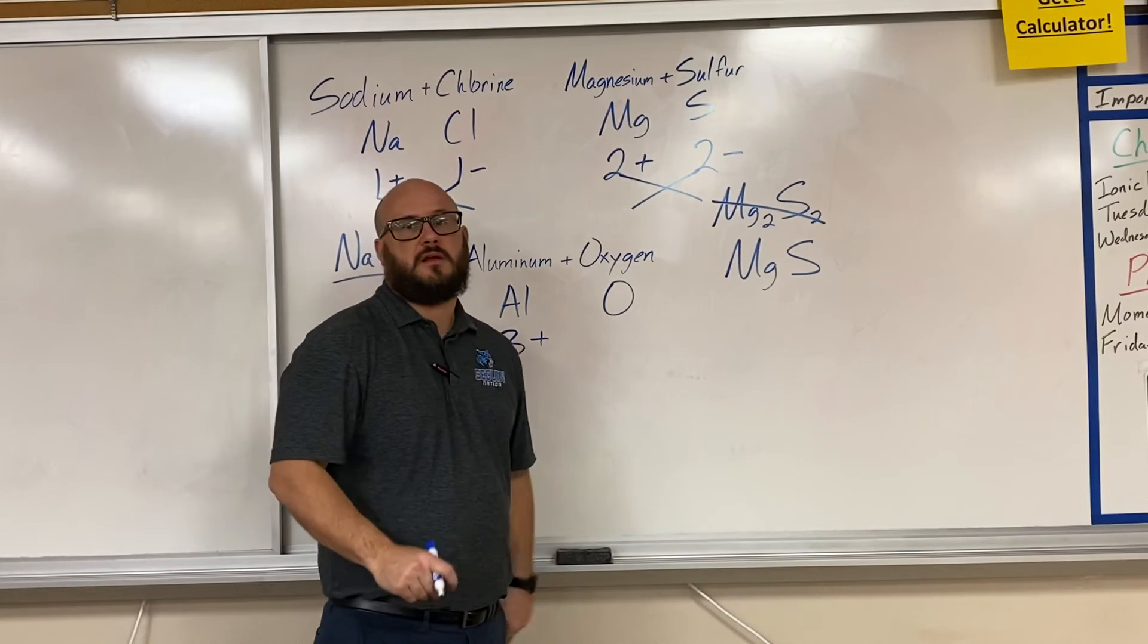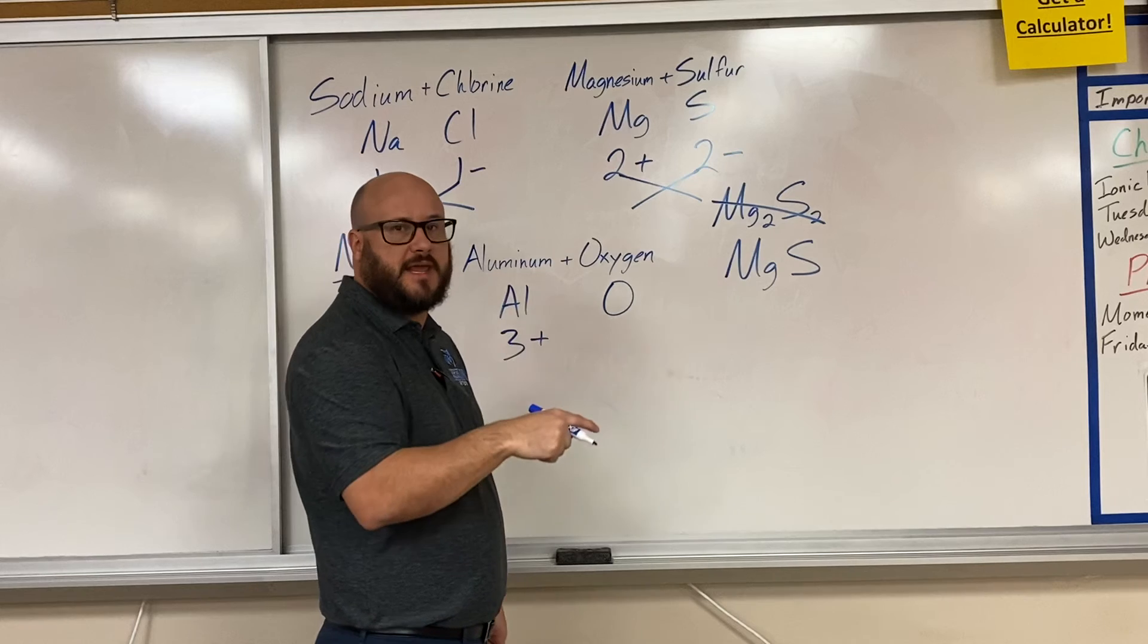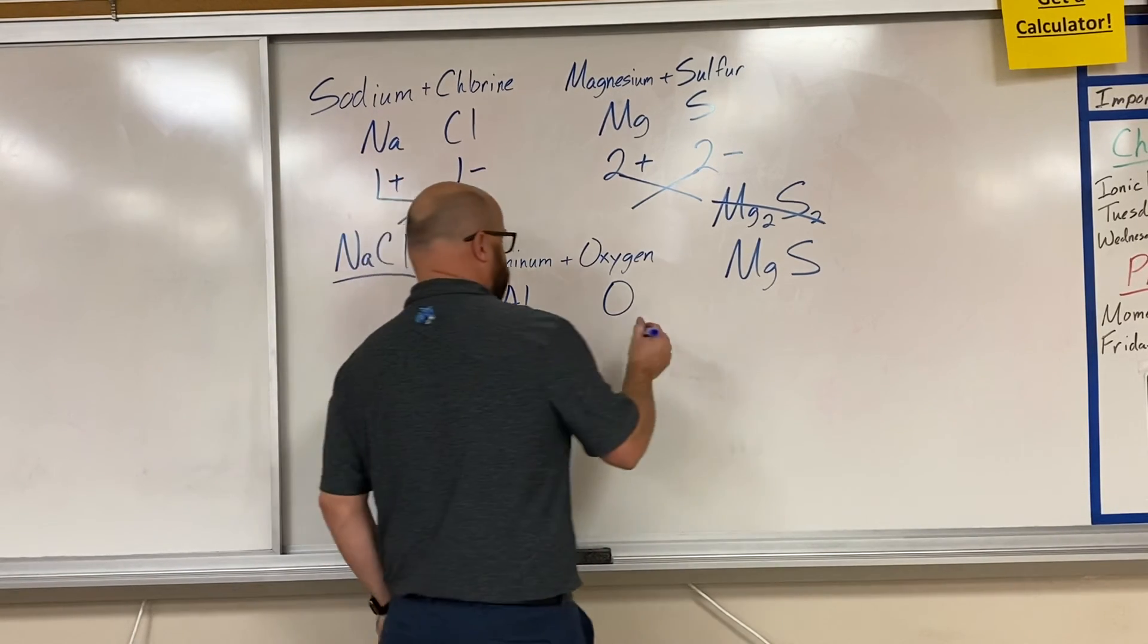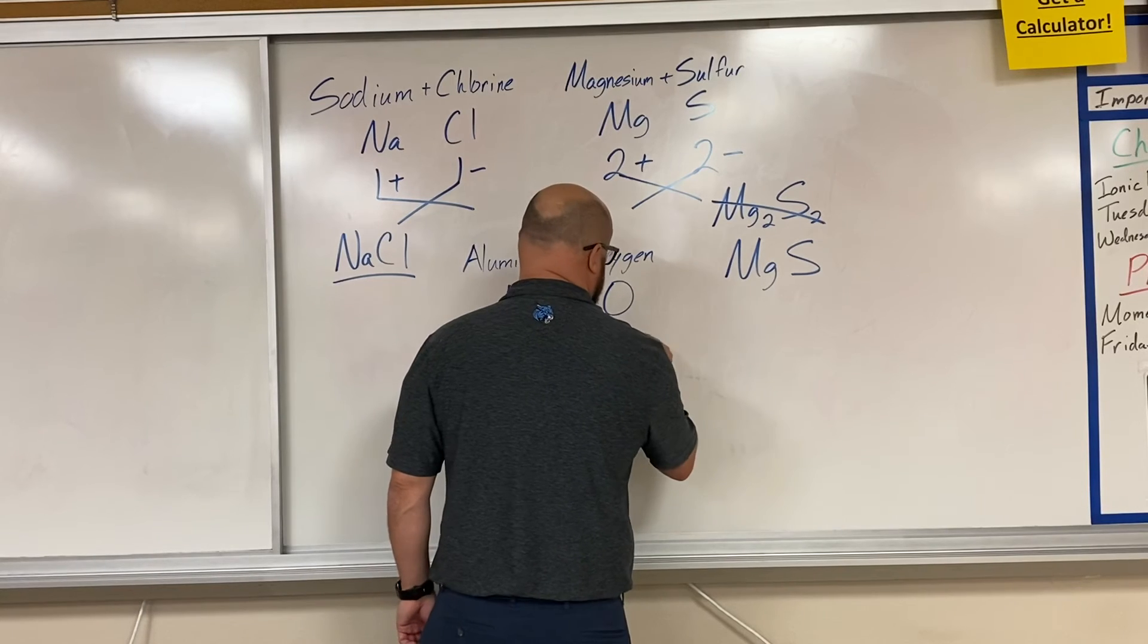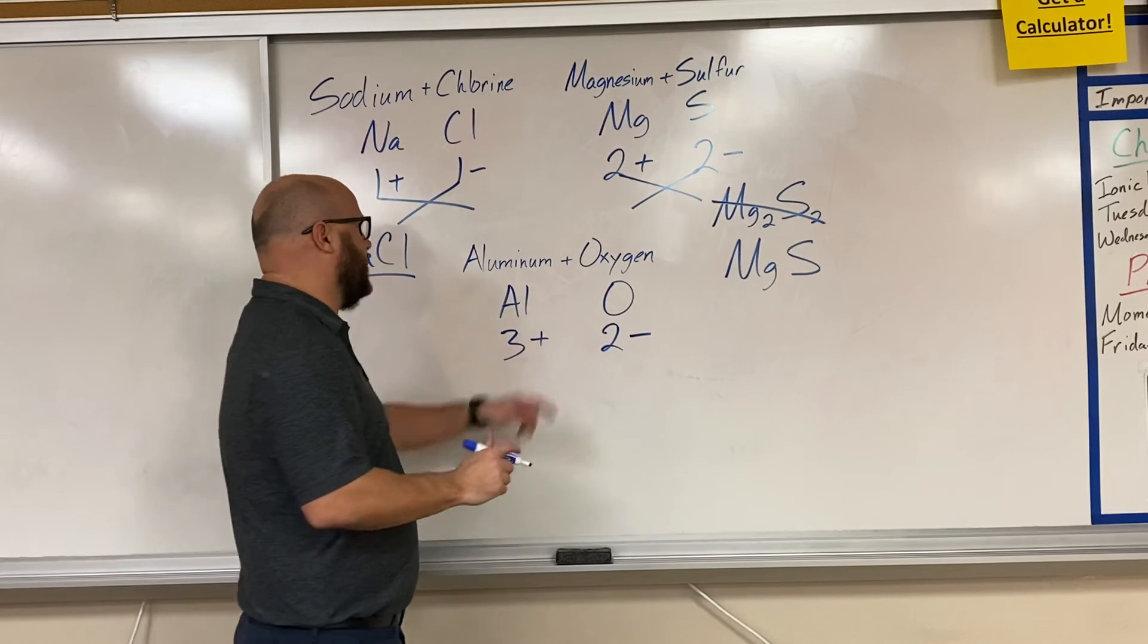Oxygen, over in group 6, has 6 valence electrons. It's going to gain 2 because it's easier to gain 2 than to lose 6. So its number is 2 and it's a nonmetal, so we're going to have a negative charge there.